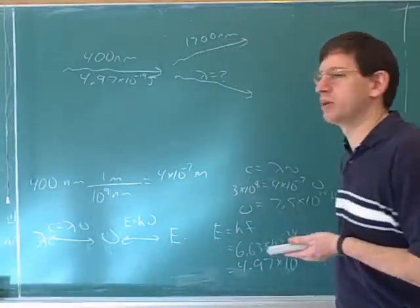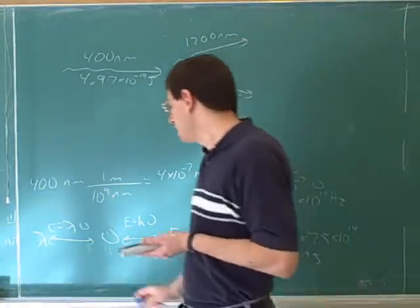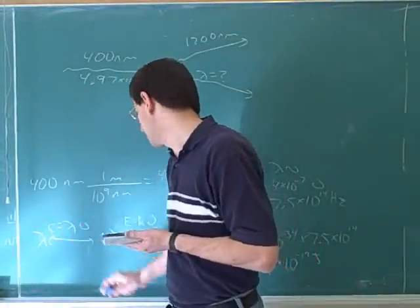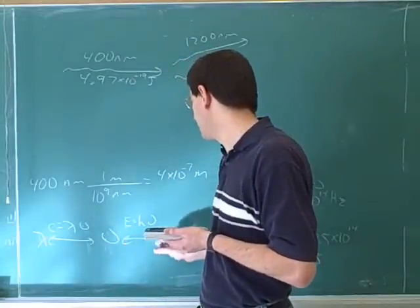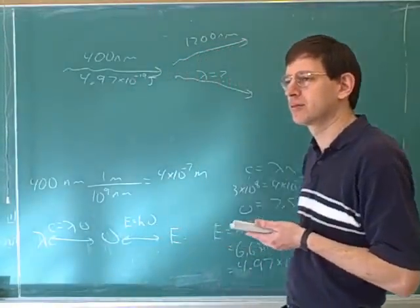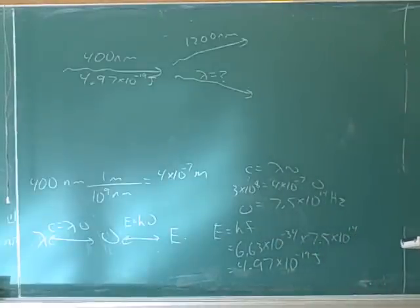So here's a little flow chart that you're going to be using all the time on the exam. You have to go back and forth between lambda and nu using this equation C equals lambda nu, and then go back and forth between nu and energy using this equation: Energy is Planck's constant times nu.